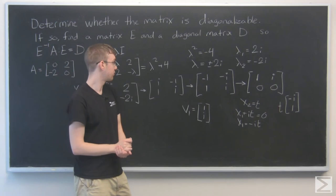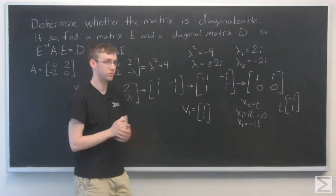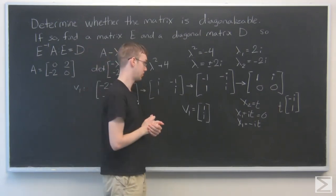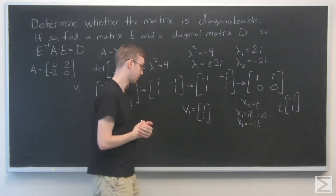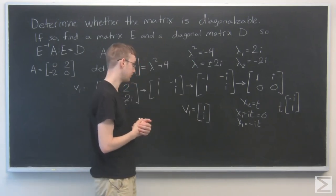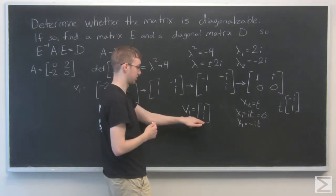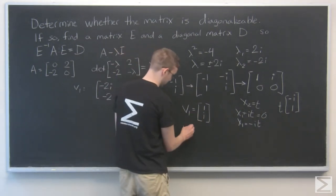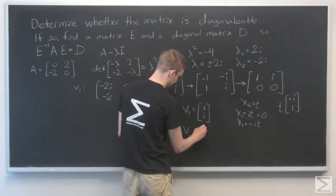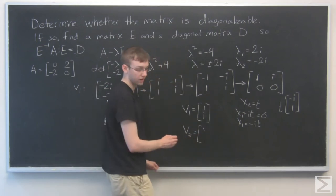All right. And finally, for vector 2, we can use the complex conjugate in order to get this second eigenvector. So all we need to do is take the complex conjugate of this i, and that's going to be negative i.